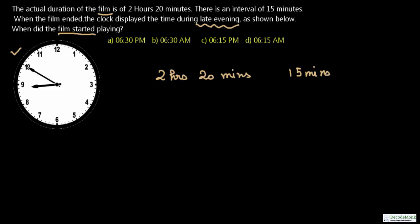First, let's figure out whether the time should be AM or PM, since the options contain both. Looking at the clock, the small hand is lying between 8 and 9 — it's very near to 9 but not quite 9. The minute hand is at 10, so the minutes are 10 × 5 = 50 minutes. The hour hand is showing 8, so the time is 8:50.